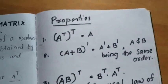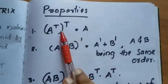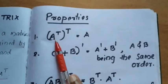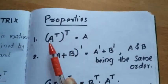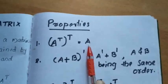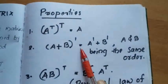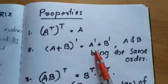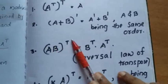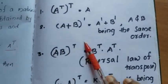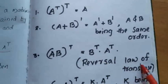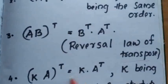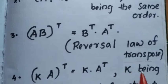For problem solving we need some properties. Property one: A transpose, the whole transpose, is equal to A. If you take a matrix A, first take its transpose, then take the transpose of that result, you will get back the same matrix A. Property two: (A + B) transpose equals A transpose plus B transpose — we can separate the transposes across addition. Property three: (AB) transpose equals B transpose A transpose — the order reverses, and we call this the reversal law of transpose. Property four: (kA) transpose equals k times A transpose, where k is a scalar constant.